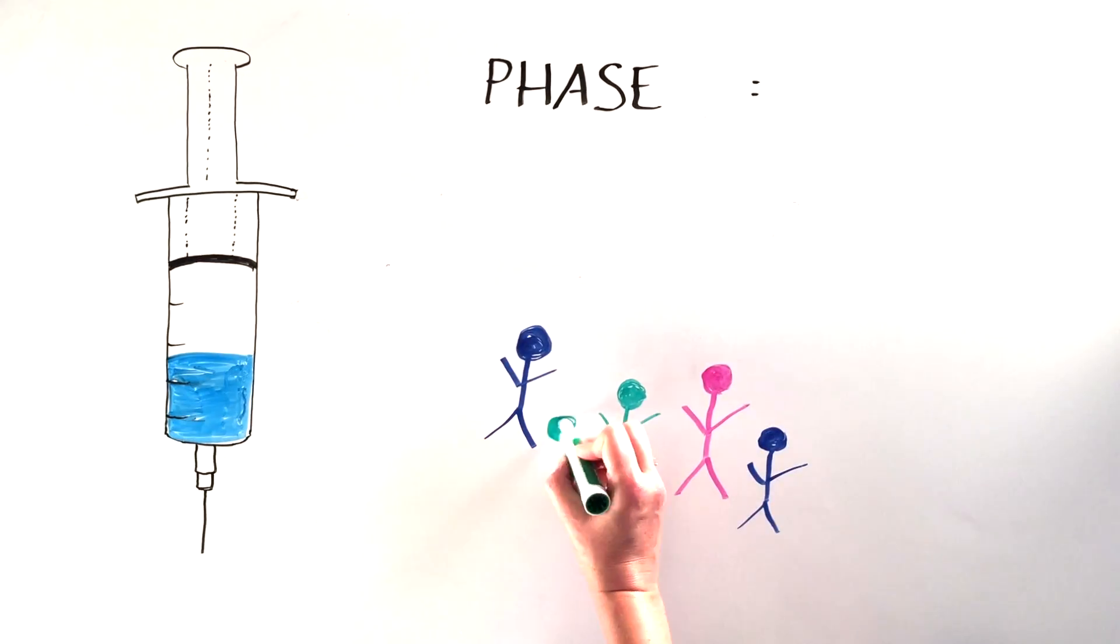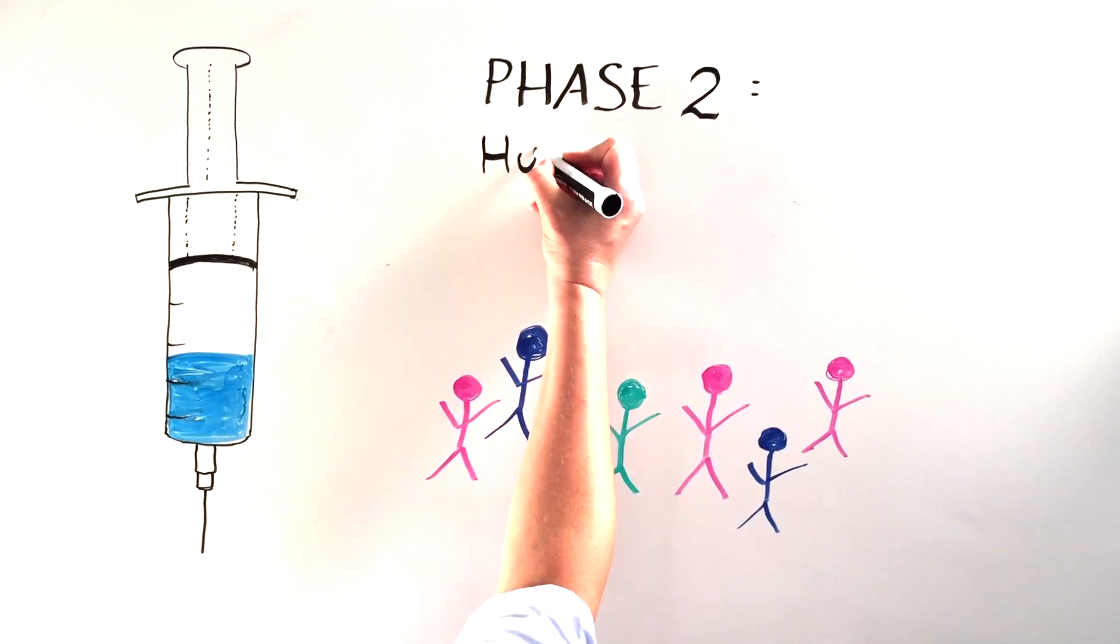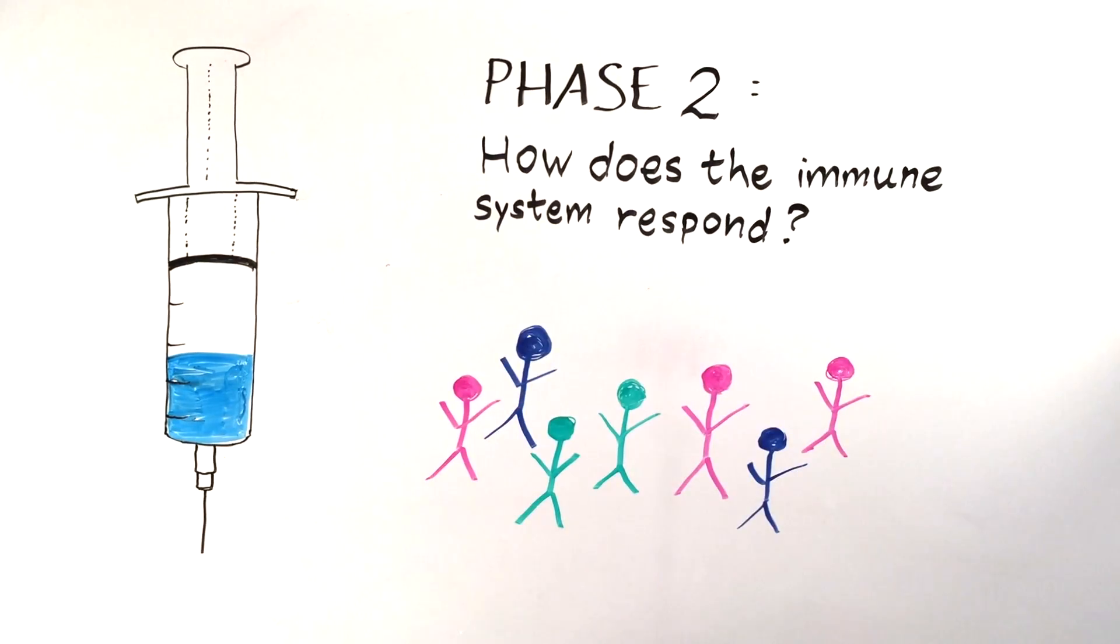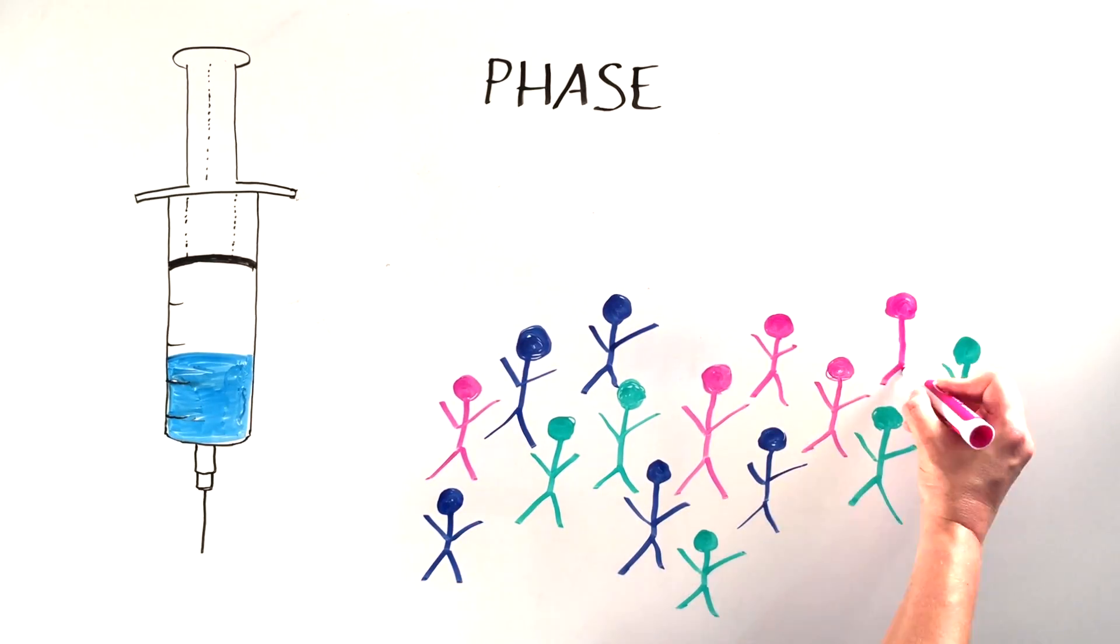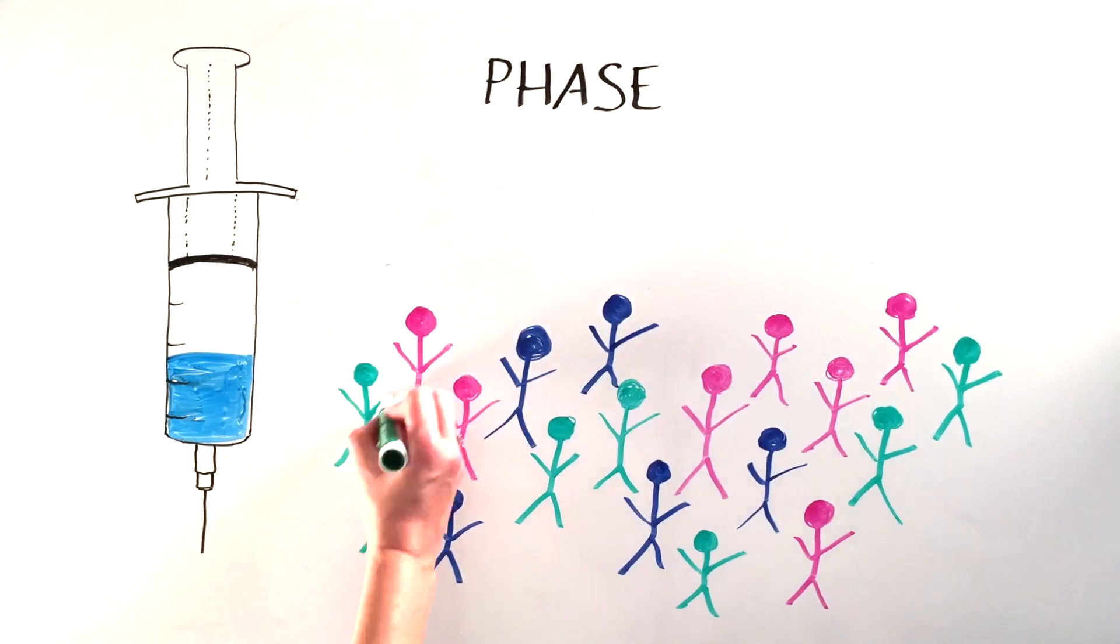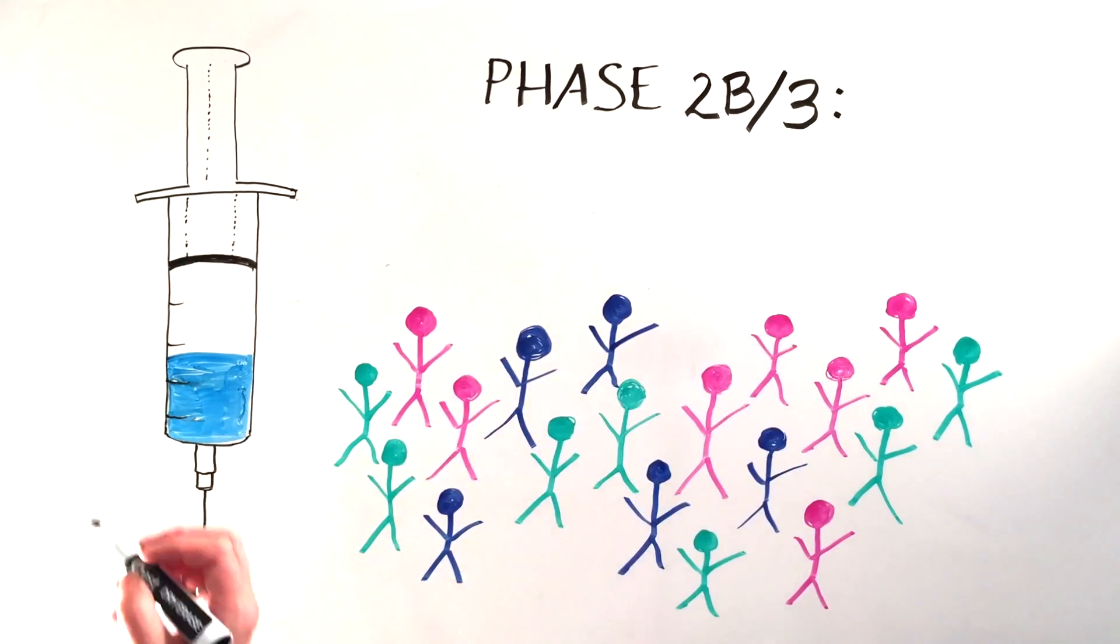Next, researchers test the vaccine's safety and the types of immune responses in more people. Promising vaccine candidates may advance to late-stage trials that examine safety and the ability to prevent infection in a very large group of volunteers.